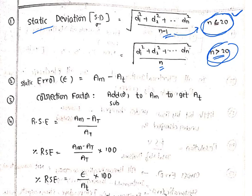These are very important formulas. The second formula: static error formula is measured value minus true value. This is an important formula.